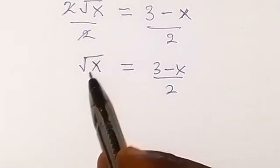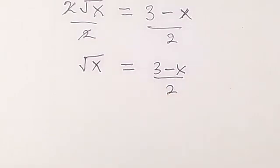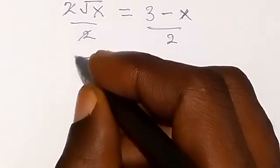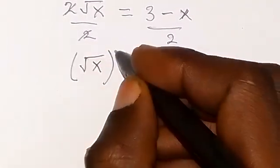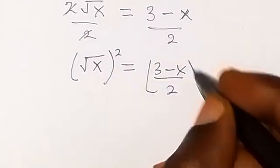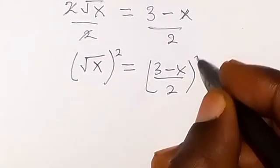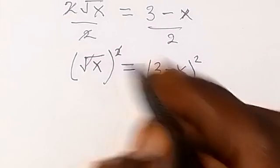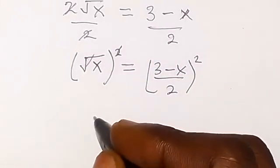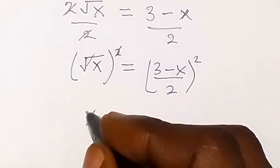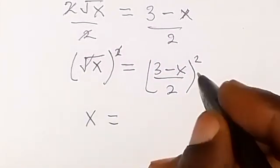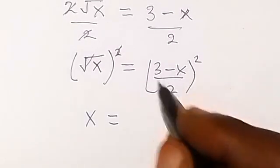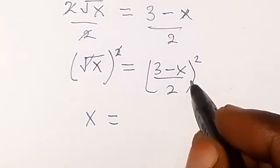From there we are finding the value of x. Let's remove this square root by taking the square on both sides. We take the square on both sides, and the square will cancel the square root, giving us x equals to the right-hand side squared.